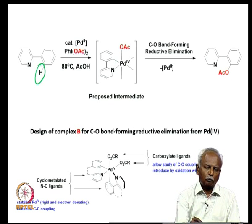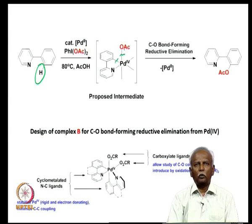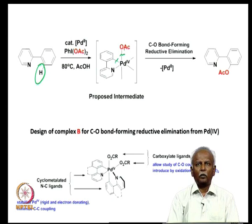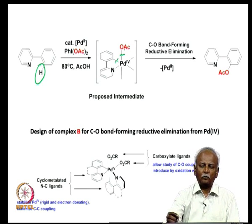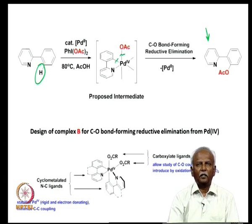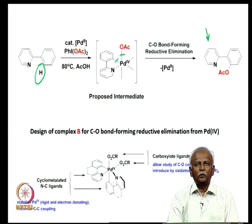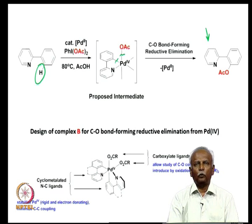Reductive elimination again happens in a cis fashion — the two bonds marked in green are broken, an acetate-aromatic ring bond is formed, and the product is the acetate-functionalized aromatic phenylpyridine. This product is formed exclusively and the intermediate is supposed to be a palladium(IV) intermediate.